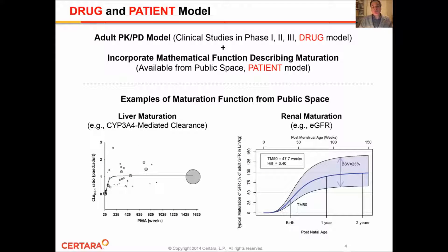As I was just mentioning, a PKPD model can be constructed based on an adult dataset, typically involving clinical studies in Phase 1, 2, and 3. So we're proposing here to merge all PK and PD data collected in adults and construct this drug model linking concentrations and efficacy. The next step will be to incorporate a mathematical function describing patient maturation.